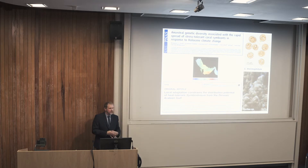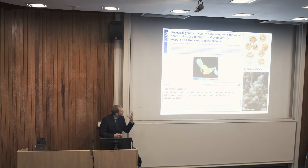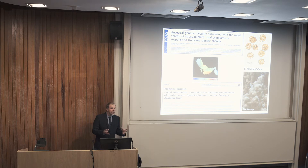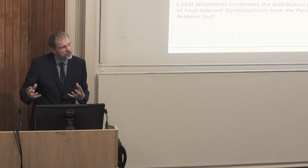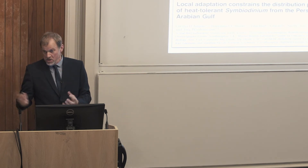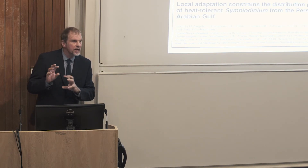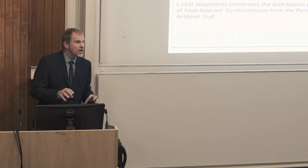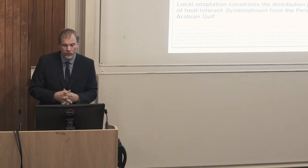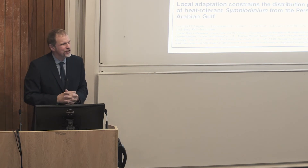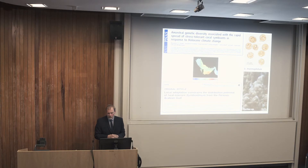We are also using the Persian Gulf as a natural laboratory. You can see here a temperature map of the Gulf — in the southern parts, temperatures regularly reach 35 degrees Celsius in summer, yet corals still grow there. We want to understand what allows them to survive under these extreme conditions. Part of our work involved studying the algal species living within these corals, and we discovered a new and distinct species of algal cells, which we named Symbiodinium thermophilum, first discovered here in Southampton.